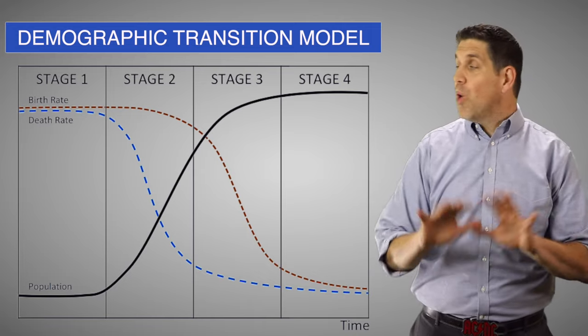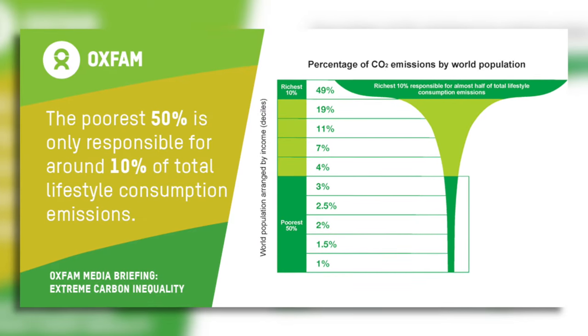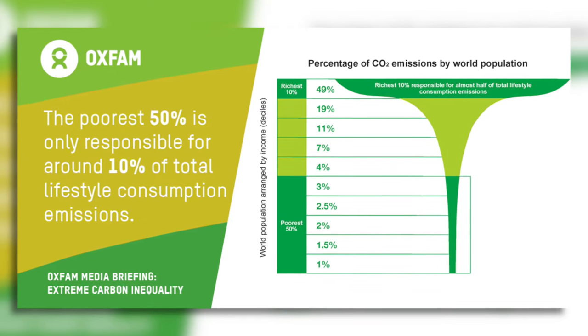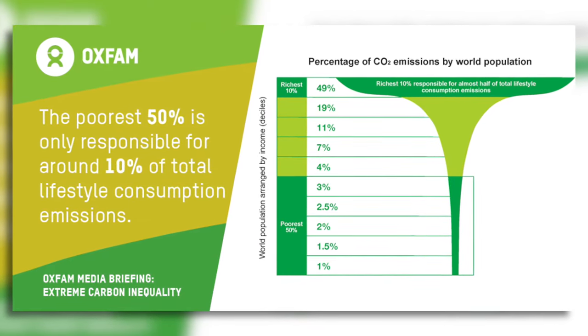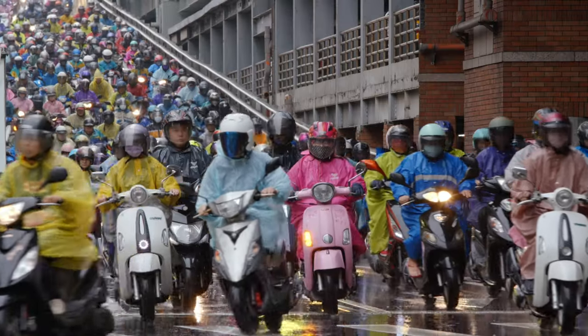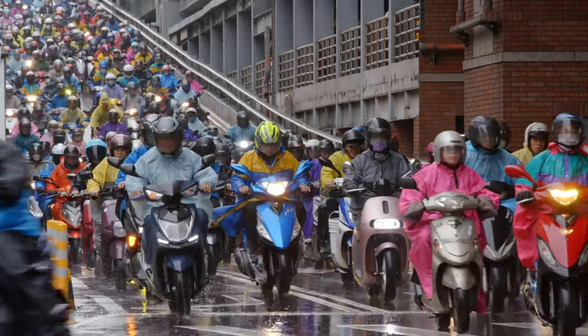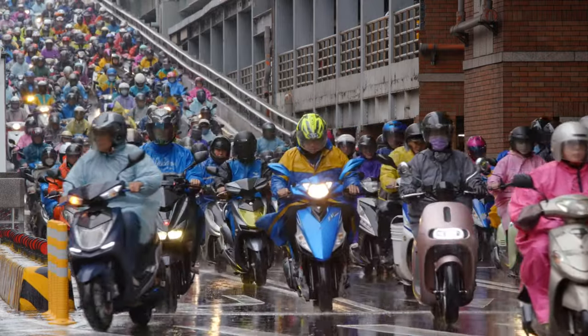But that creates a whole new set of problems. Right now, the richest 10% of humans account for about 50% of the world's CO2 emissions. As more and more countries develop, people are going to want more things, and that's likely going to put a strain on our resources and the environment. So if you think about it that way, the problem isn't 'are there too many people?' — it might be 'are there too many rich people?' But that is a whole other video.